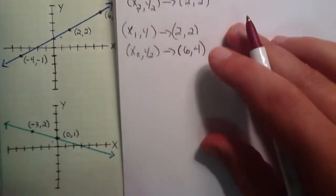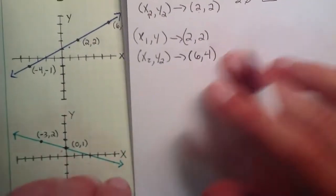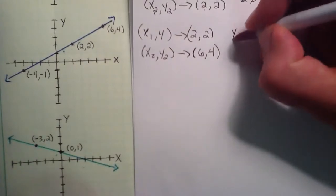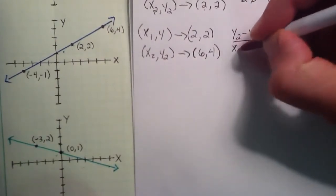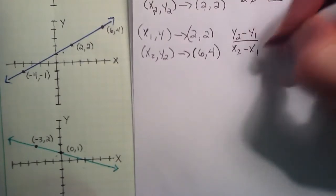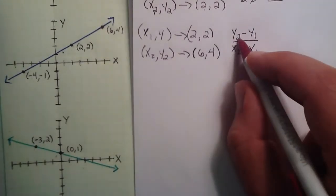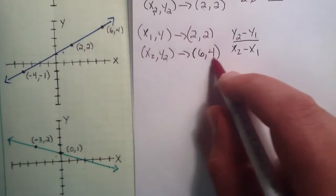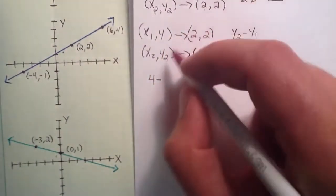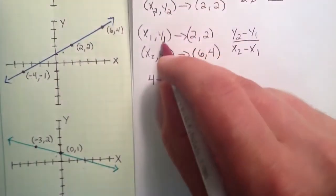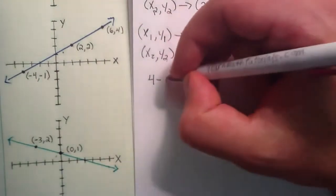So we're going to go ahead again and do y2 minus y1 divided by x2 minus x1. So this time, y2 is here, which refers to the right hand side, or the 4. And we subtract our y1, or the right hand side of this point, which is the 2.